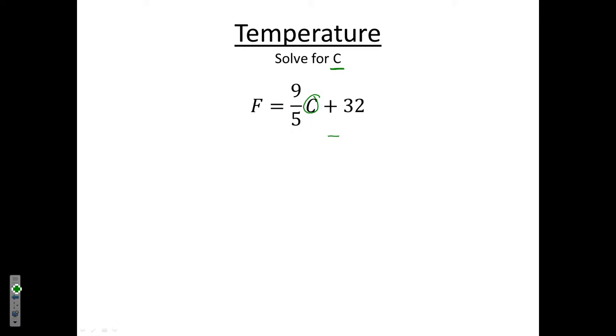How would you move or get rid of a plus 32? The opposite, of course, would be to subtract 32 from both sides. Remember, whatever you do to the left, you have to do to the right. Now, be extremely careful on this left-hand side. F and negative 32 are not like terms, so you can't combine them together. So you just basically write them side by side: F minus 32.